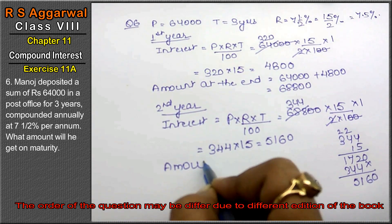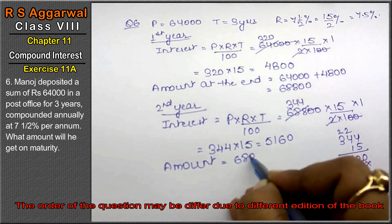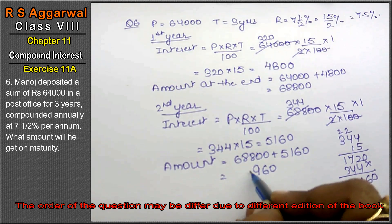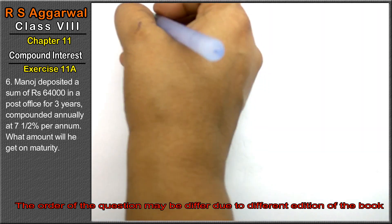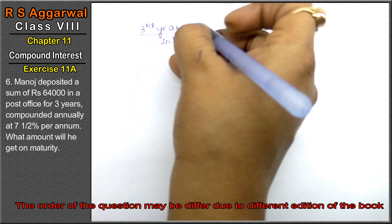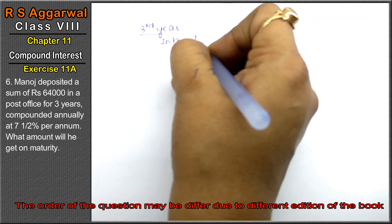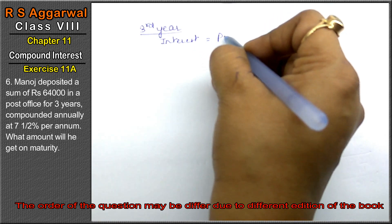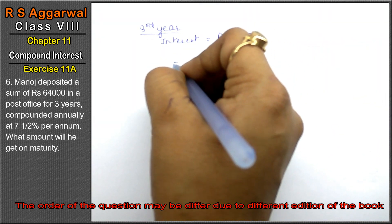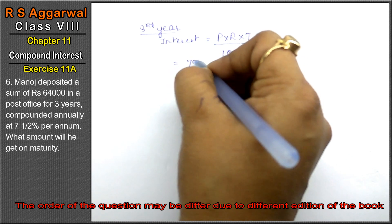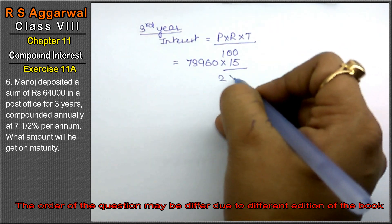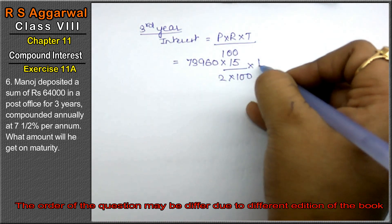Amount at the end of second year is 68,800 plus 5,160, giving 73,960. Now for the third year interest: formula is P into R into T upon 100. P is 73,960, R is 15 upon 2, T is 1.